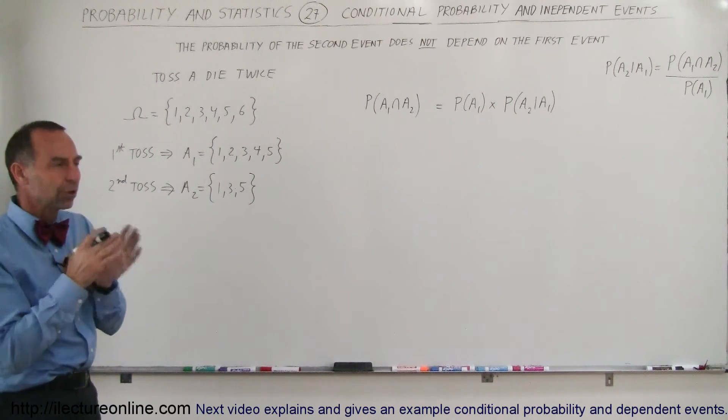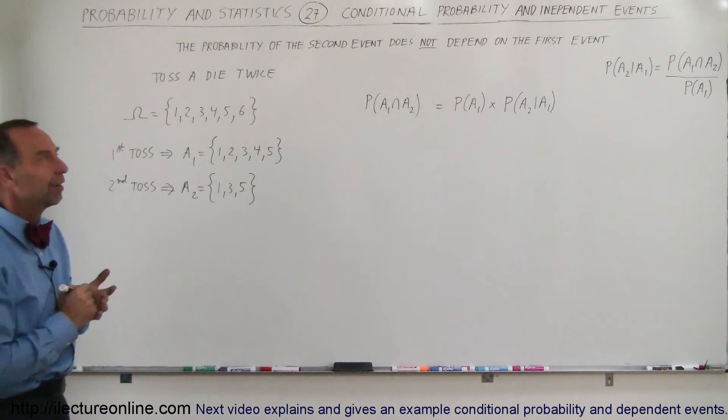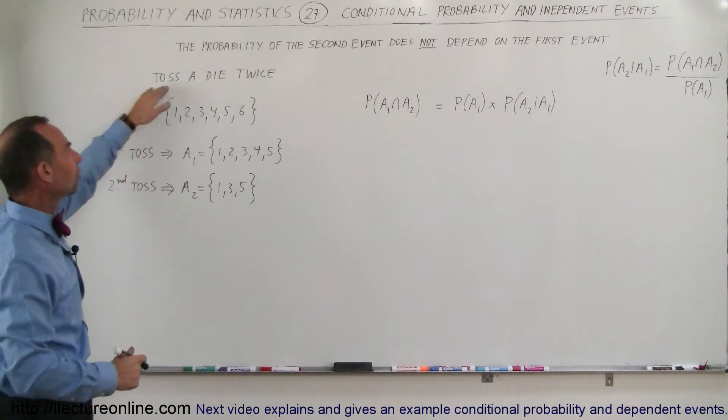So what we're doing here is we're looking at conditional probability with independent events. There's two events. We're going to toss a die twice.